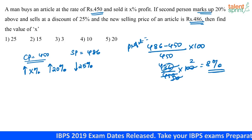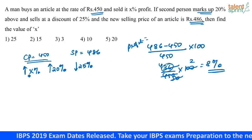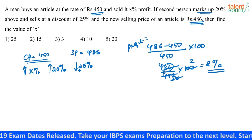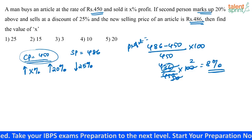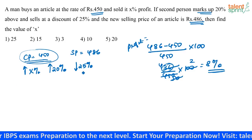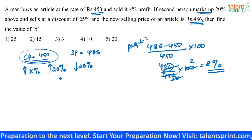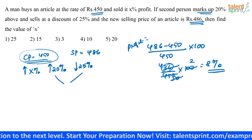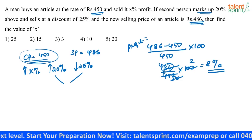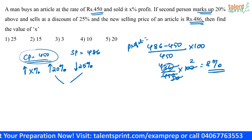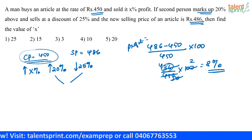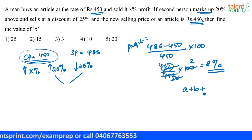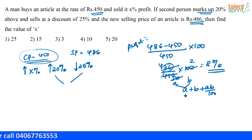All three operations — x percentage increase, 20 percentage increase, and 25 percentage decrease — have successively happened on the cost price, so we use effective percentages. When there are only two percentages a and b, the effective percentage is given by: a plus b plus ab by 100.